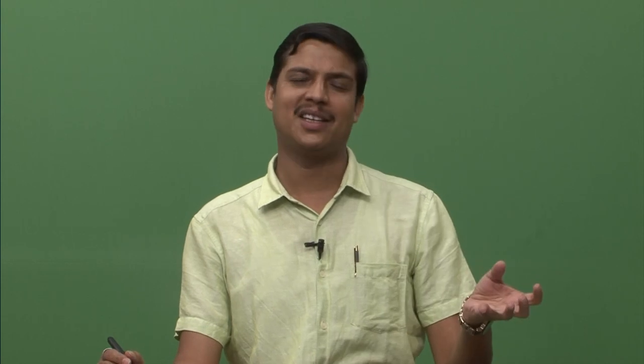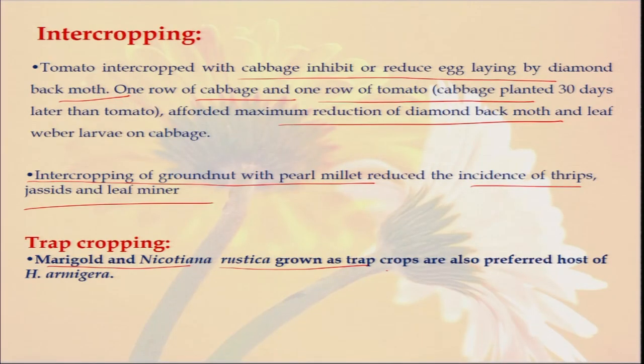There are lots of crops used in what is called trap cropping. In our farm, we should sometimes use different types of crops that will attract the insect. So most of the insect population will be on that crop — suppose there are 10 insects and 5 or 6 go to the trap crop, then only 3 or 4 will remain on the main crop. The causal damage for our main economic crop will be less. Marigold and Nicotiana rustica are grown as trap crops for Helicoverpa armigera, which is a very important pest that attacks lots of crops. So trap cropping should also be promoted in our organic farm.